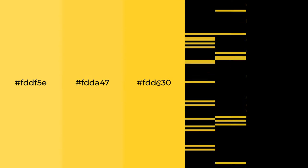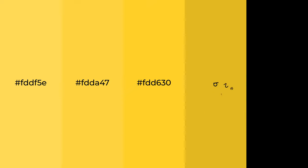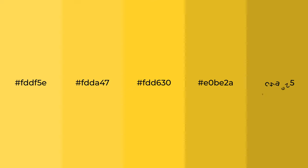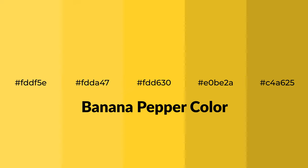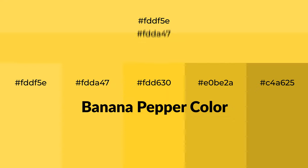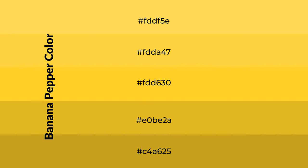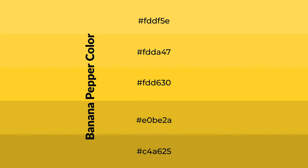Warm shades of banana pepper color with orange hue for your next project. To generate tints of a color, we add white to the color. Tints create light and exquisite emotions.